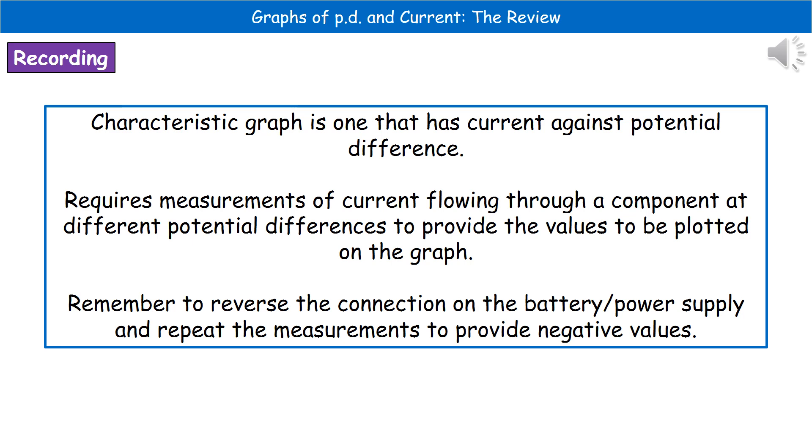In order to create these, we need measurements. We need to know the current that flows through a component at different potential differences. You'd carry out an experiment where you record the current at different potential differences for that one component. The one thing we need to remember is to reverse the connection on our battery or power supply and repeat all the measurements. If we don't do that, we won't have those negative values.